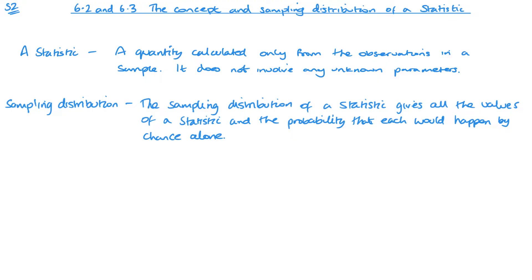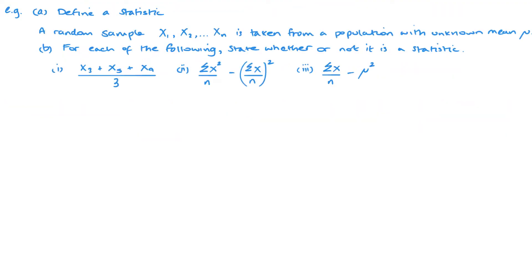Let's get on to the first example, simply about the concept of a statistic. Part a asks us to define a statistic. A statistic is simply a quantity calculated only from the observations in a sample.